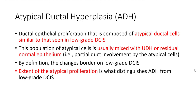Atypical ductal hyperplasia is defined as a ductal epithelial proliferation composed of atypical ductal epithelial cells with nuclear features similar to those seen in low-grade DCIS. What distinguishes atypical ductal hyperplasia from ductal carcinoma in situ is only partial duct involvement — the involved duct profile usually has some mixed usual ductal hyperplasia or residual normal epithelium. By definition, the changes will border on low-grade DCIS, so it really comes down to the extent of the atypical proliferation.